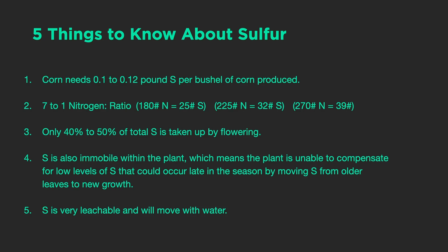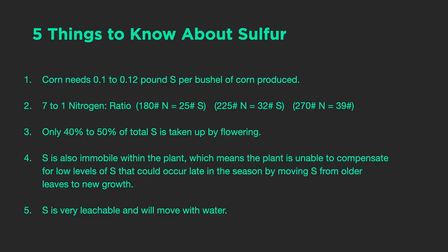Five key facts about sulfur: corn needs about 0.1 to 0.12 pounds of sulfur per bushel of corn produced. At the PTI farm we use sulfur alongside nitrogen at a 7-to-1 ratio — so 180 pounds of nitrogen means 25 pounds of sulfur, 225 pounds of nitrogen means 32 pounds of sulfur, and 275 pounds of nitrogen means nearly 40 pounds of sulfur. Also, only 40 to 50 percent of total sulfur is taken up by flowering.